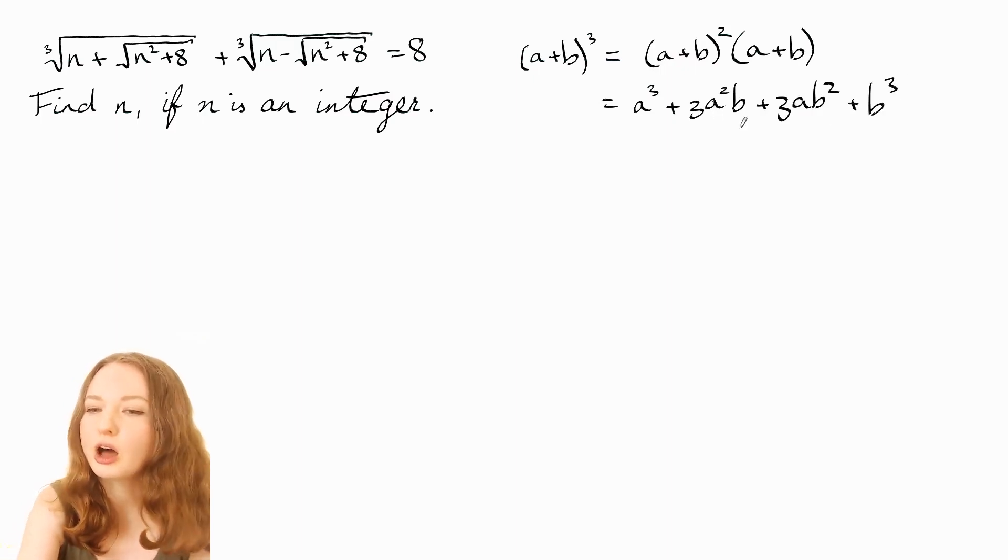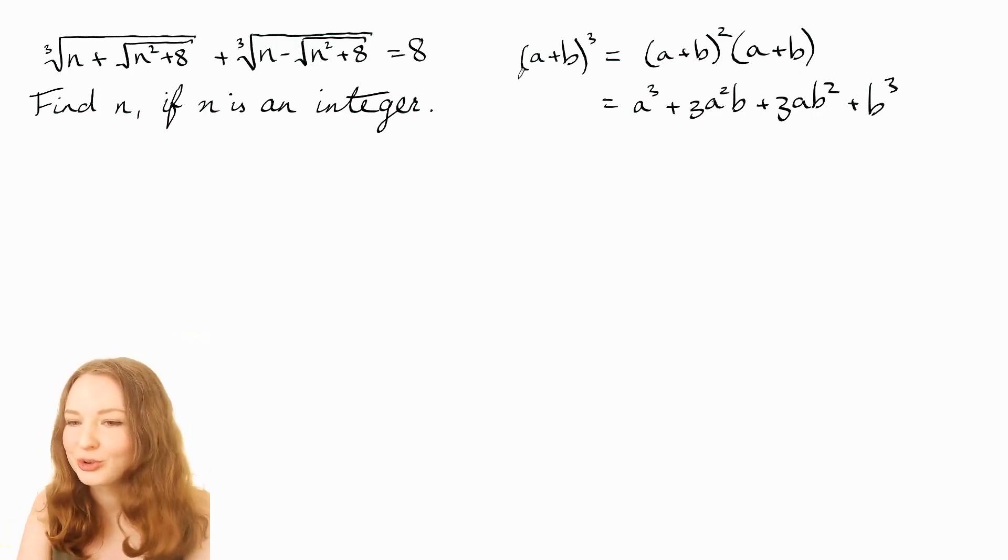So these are what's called the cross terms. Like people who are just starting out with algebra, they tend to think (a+b)³ is just a³ + b³. I think probably everyone watching this video is old enough to know that you've got these other terms as well.